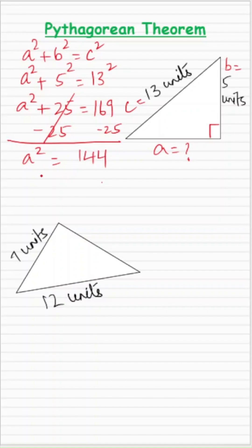The A value will be the square root of 144, which is equal to 12. So A comes out to be 12 units.